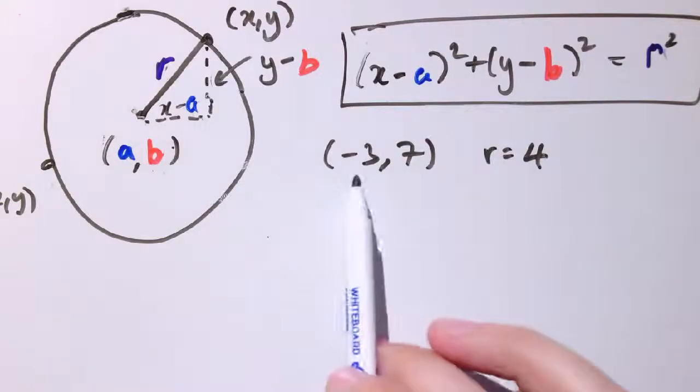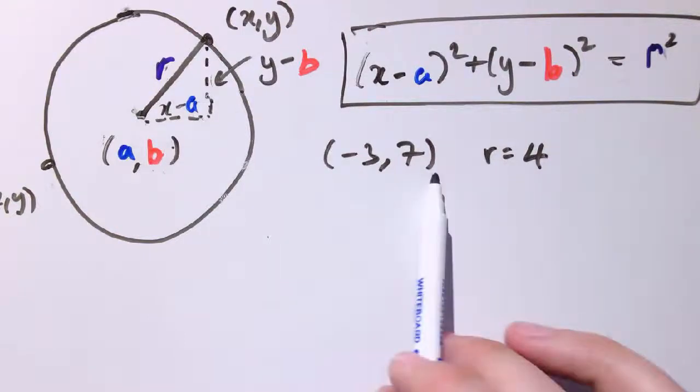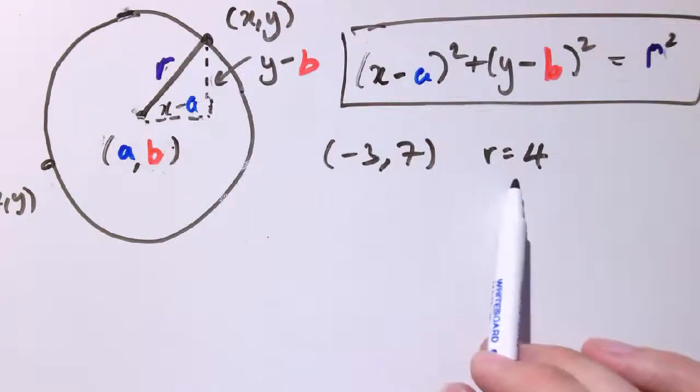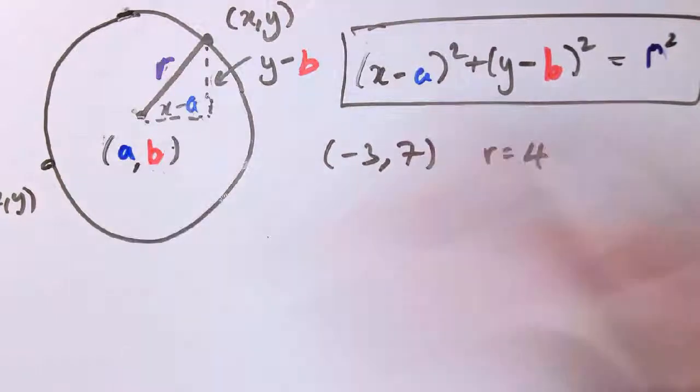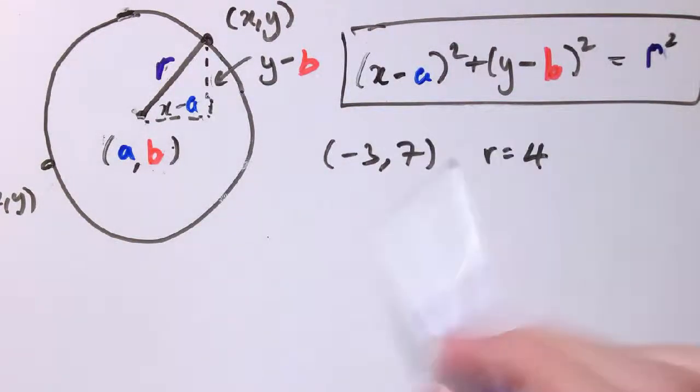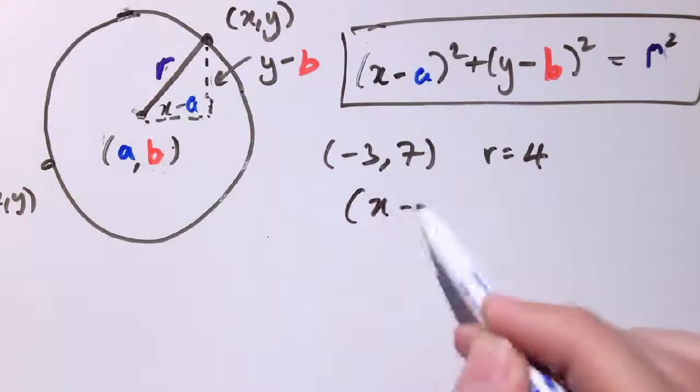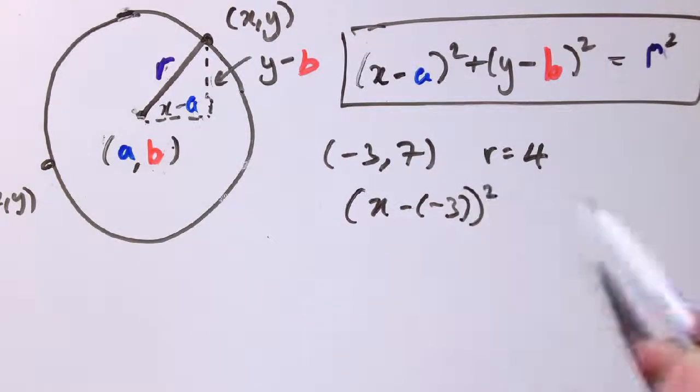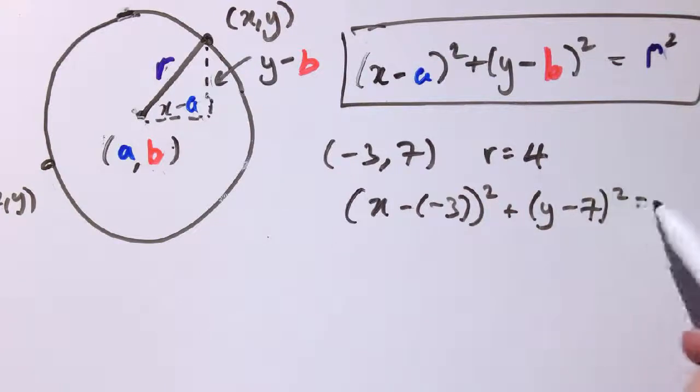Just be a bit careful with negative numbers again. So if it goes through minus 3, 7 and has radius 4, of course r can't be negative. The radius has to be positive. But here a is minus 3, b is 7. So I get x minus minus 3 squared plus y minus 7 squared is 4 squared.